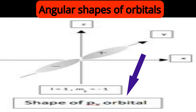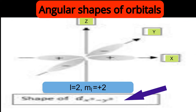I hope the p sub-shell and three possible orbitals px, py, and pz are clear. Let us see the d sub-shell. For d, the azimuthal quantum number l equals 2. If l equals 2, the possible values for ml are +2, +1, 0, −1, −2 — five values total. Let us see the shapes of those five orbitals.